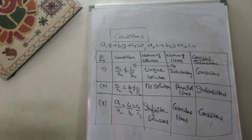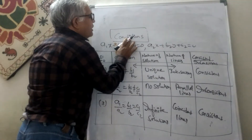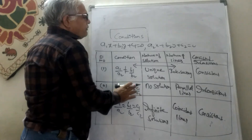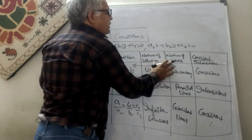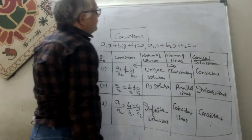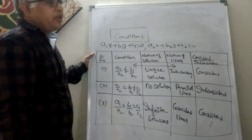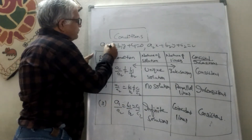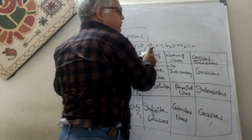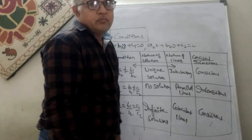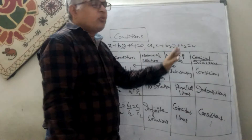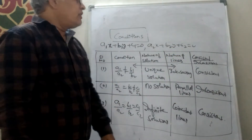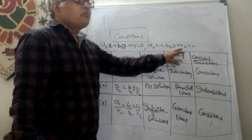We are taking up the conditions for the nature of solutions — nature of lines and consistency or inconsistency. We are provided with two linear equations: a1x + b1y + c1 = 0 and a2x + b2y + c2 = 0. We have to explore the consistency or inconsistency, i.e., the nature of solutions of this system.